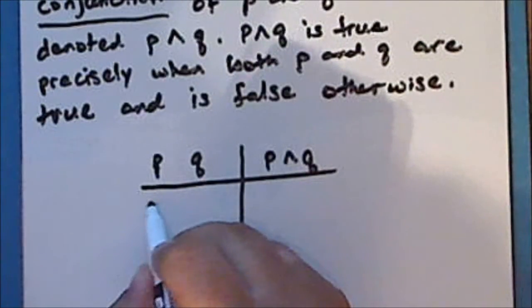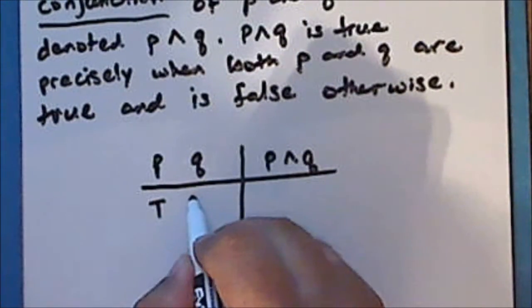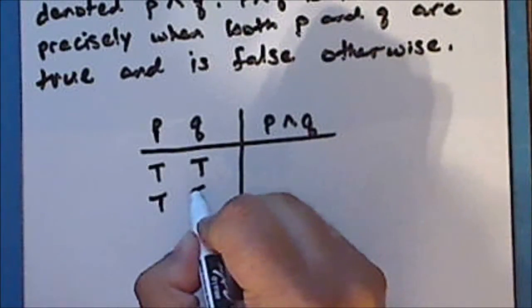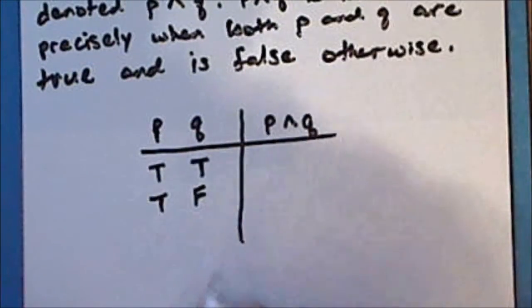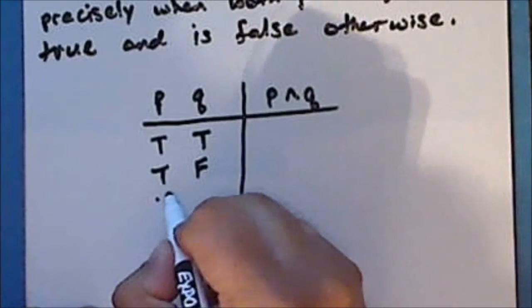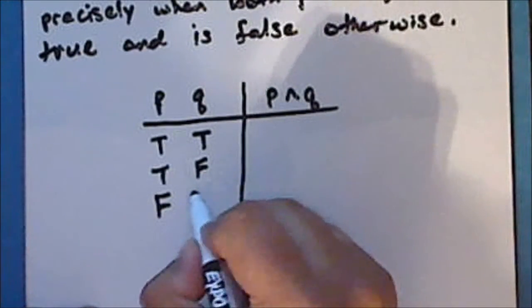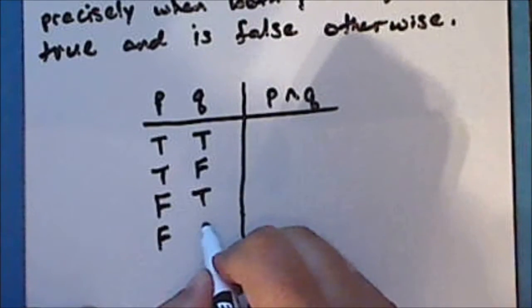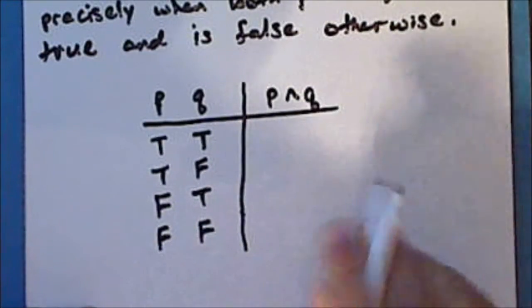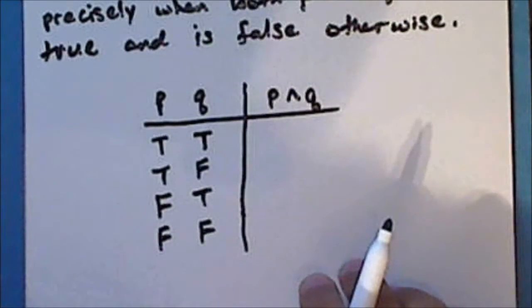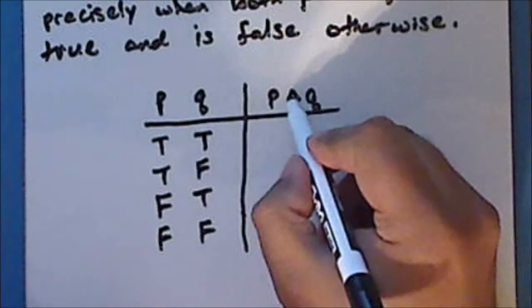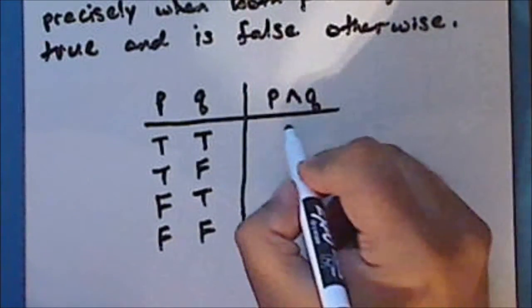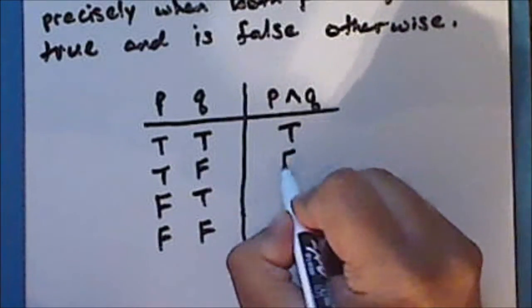P can be true while Q is true; P can be true while Q is false; P can be false while Q is true; and P can be false while Q is false. The conjunction is true whenever both P and Q are true, and is false otherwise.